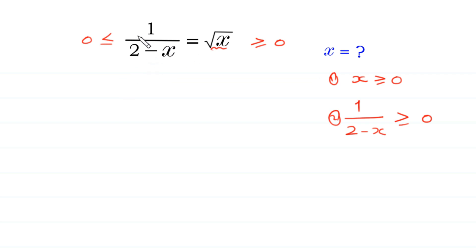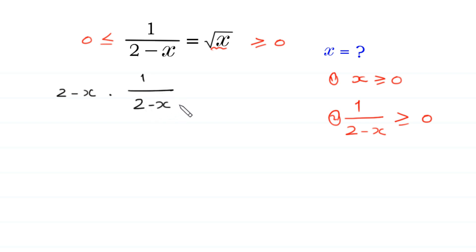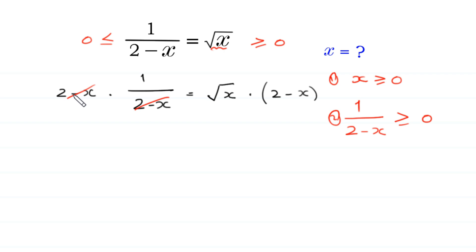Now let's start by multiplying both sides of this equation by the expression 2 minus x. 2 minus x times 1 over 2 minus x equals square root of x times 2 minus x. Now this 2 minus x cancels with this 2 minus x, and on the left side we have 1 equals square root of x times 2 minus x.